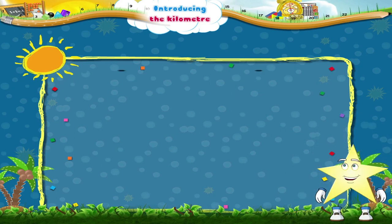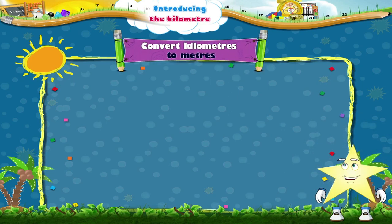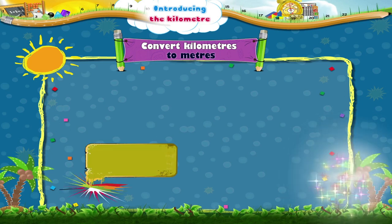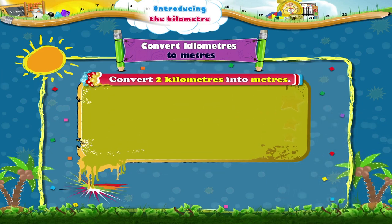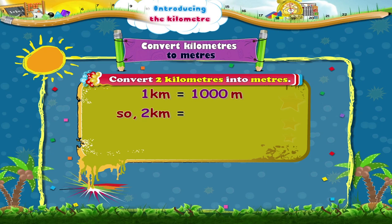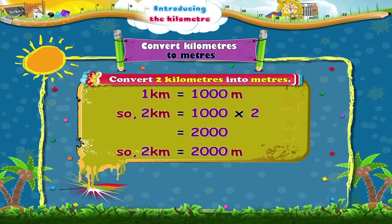Now let us learn how to convert kilometres to metres. Let us convert two kilometres into metres. One kilometre equals one thousand metres, so two kilometres equals one thousand multiplied by two, which is two thousand. So two kilometres equals two thousand metres.